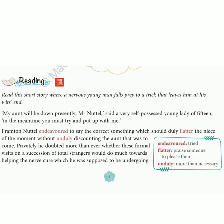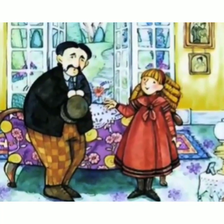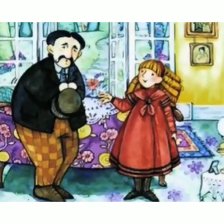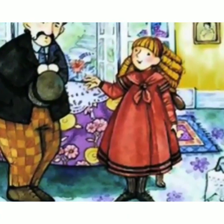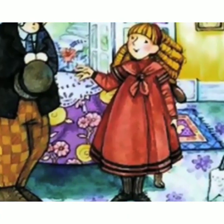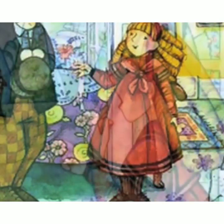Vera is the girl who will play a practical joke on Mr. Frampton Nuttel. The story basically has three main characters: Frampton Nuttel, Vera — a fifteen-year-old self-possessed girl — and Miss Sapleton. The setting of the story is the living room of Miss Sapleton's house.